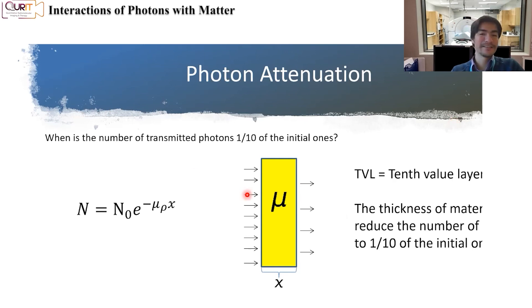And then there's another common use term that is the tenth-value layer. Similar, but is now what is the thickness of my material such that I obtain one tenth of the initial photons on the other side of the material.